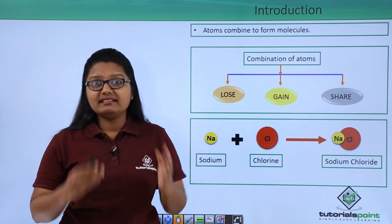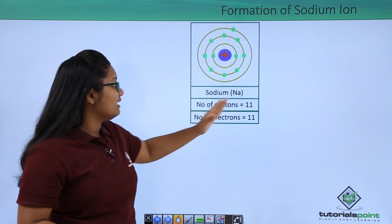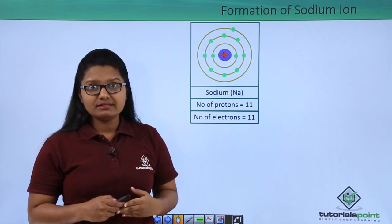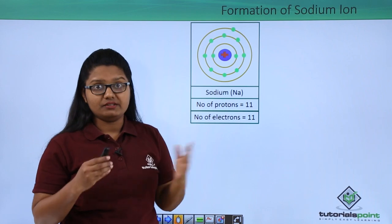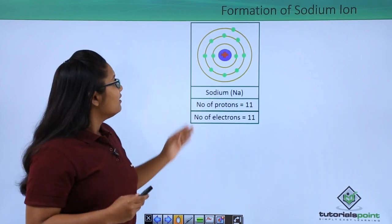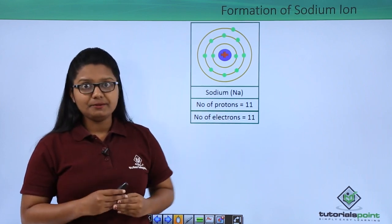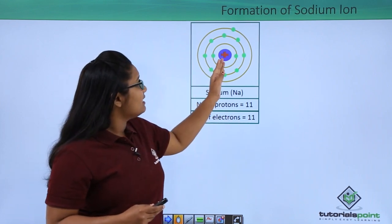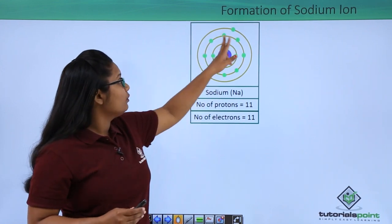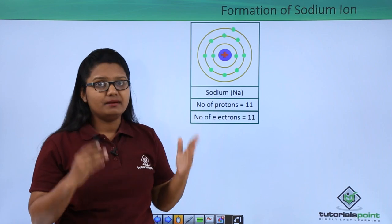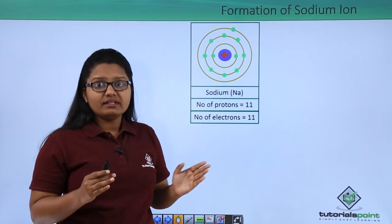A sodium atom has 11 protons and 11 electrons which nullify each other, and thus this sodium atom becomes electrically neutral. We see that it has three shells in which these 11 electrons are distributed. The two inner shells are completely filled, but the outer one has only one electron and is not completely filled.